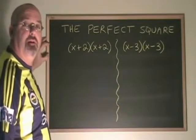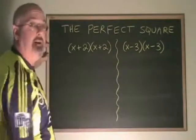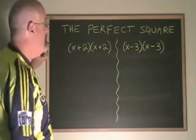The perfect square trinomial is the name of an expression that we get when we multiply a binomial by itself. Let's do that now.